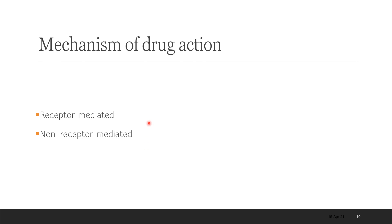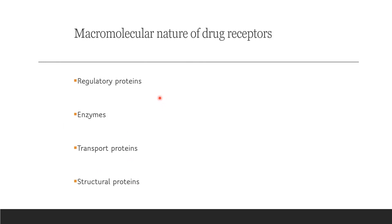Moving on to pharmacodynamics: the mechanism of drug action is either receptor-mediated or non-receptor-mediated. Receptor-mediated: for example, epinephrine (also called adrenaline) stimulates the sympathetic system by acting on adrenergic receptors — specifically alpha and beta receptors. Before discussing non-receptor-mediated actions, you should know the nature of drug receptors: they can be regulatory proteins, enzymes, transport proteins, or structural proteins.